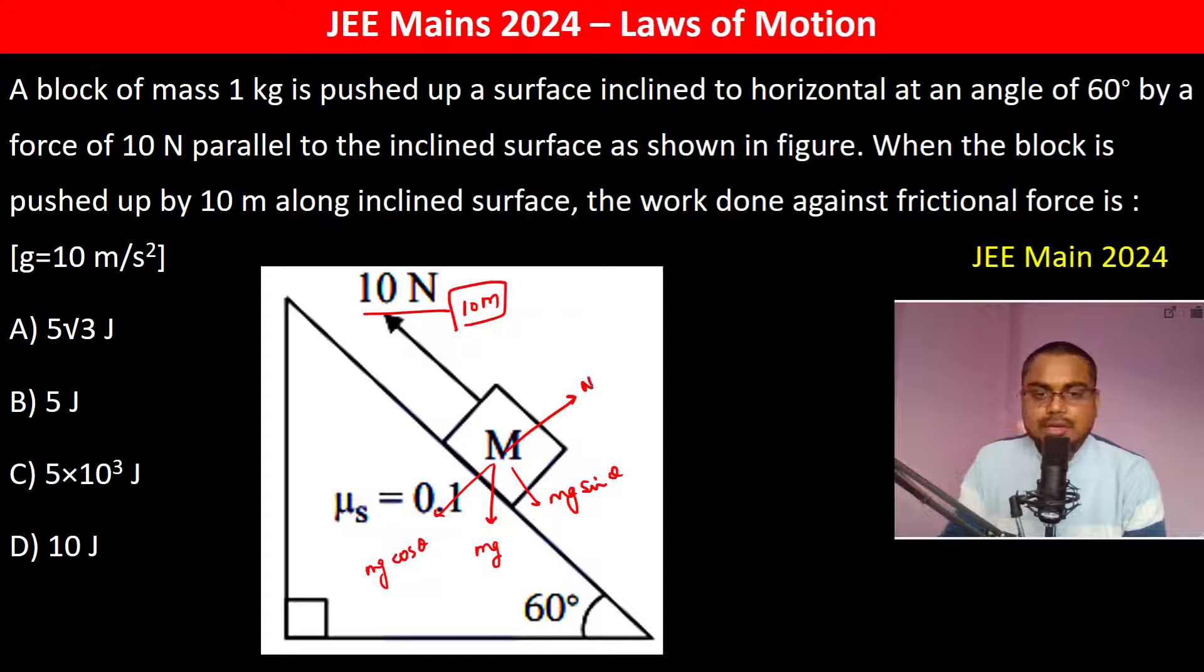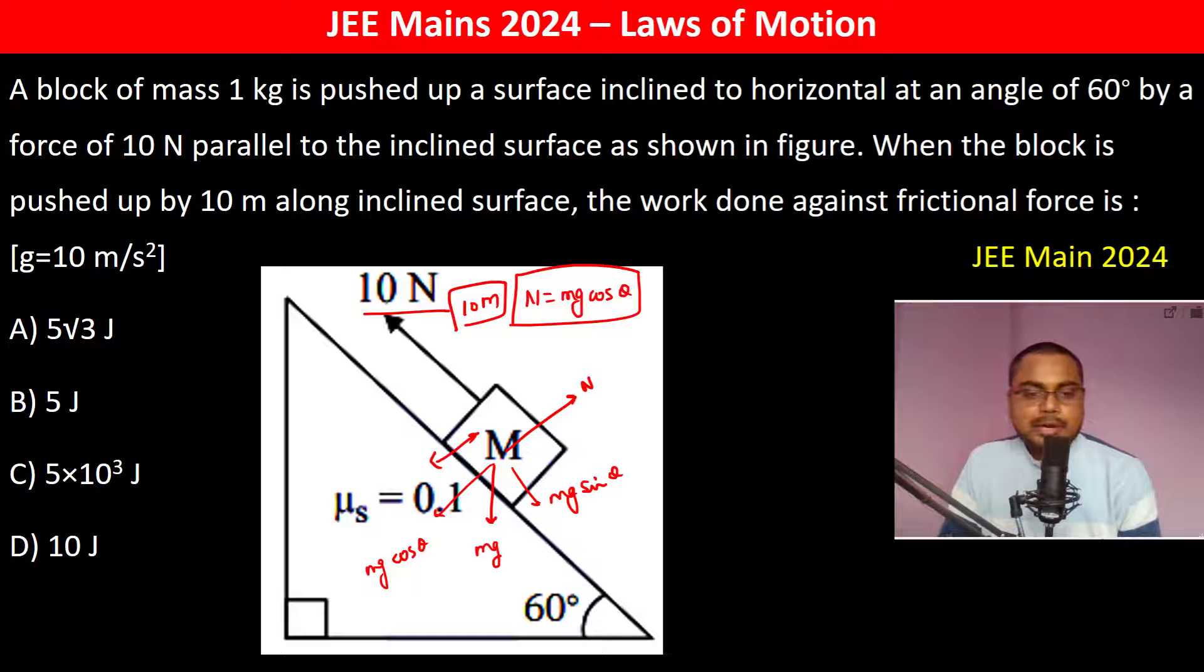And this is the normal. Normal jo hai equal ho jayega mg cos theta ke, because there is no movement in the direction perpendicular to the inclined plane.